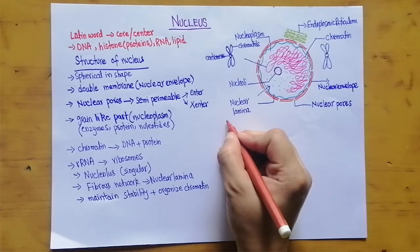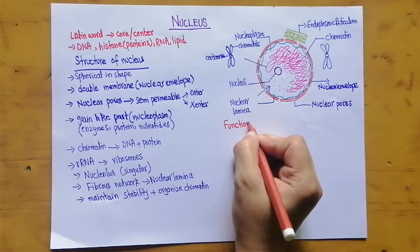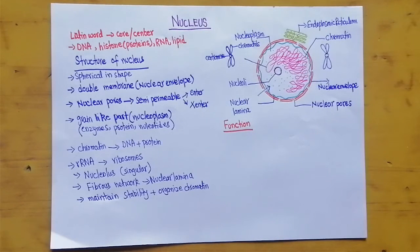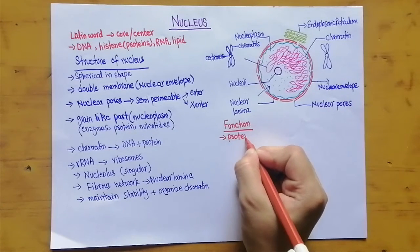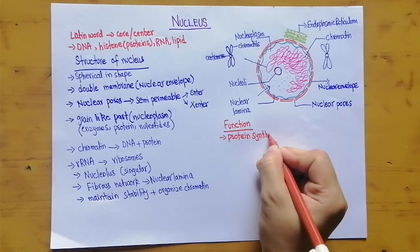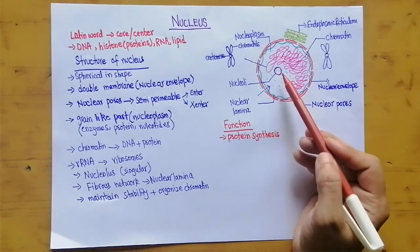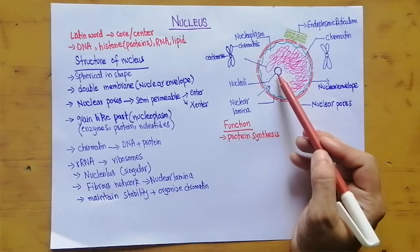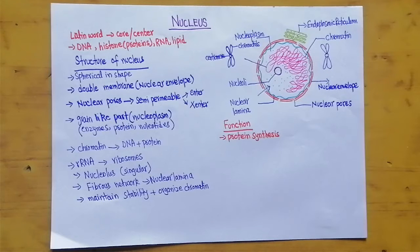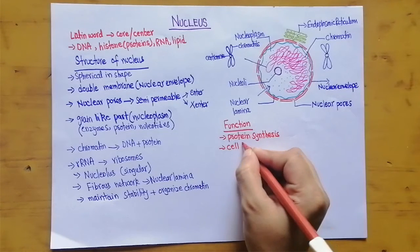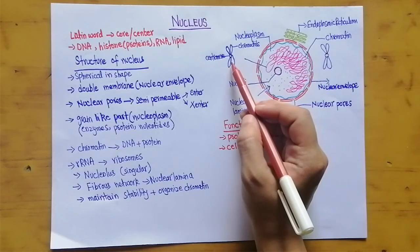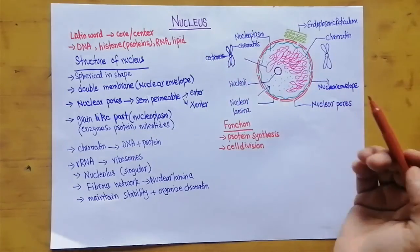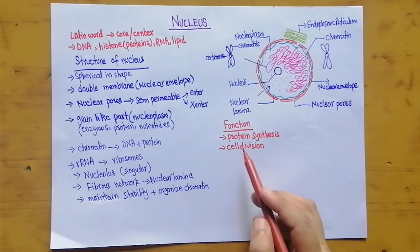The nucleus has several important functions. First, it is involved in protein synthesis — ribosomes are produced in the nucleolus and ribosomes are essential for synthesizing proteins. Second, it is important in cell division, because when the cell divides, chromatin is converted into chromosomes which are then distributed into two new daughter cells.